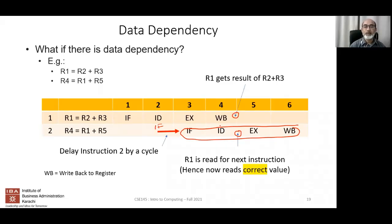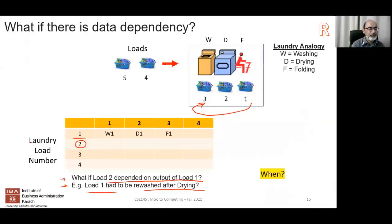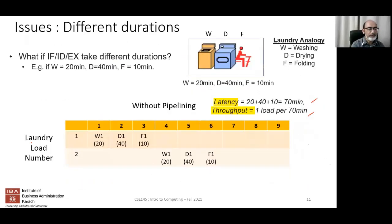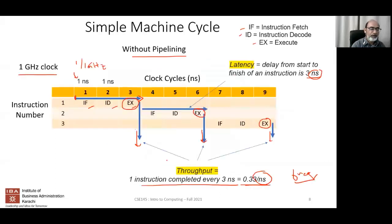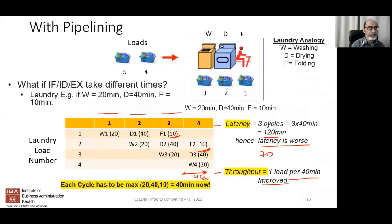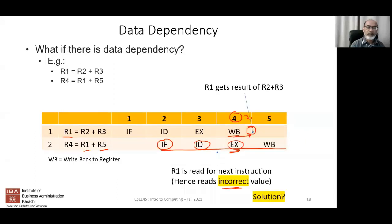Pipelining, like any speed-up technology, has pros and cons. The complexity increases: you must detect whether the next instruction depends on the previous one and handle it specially. This complexity could be managed by the control unit or by the operating system — which we'll discuss shortly.